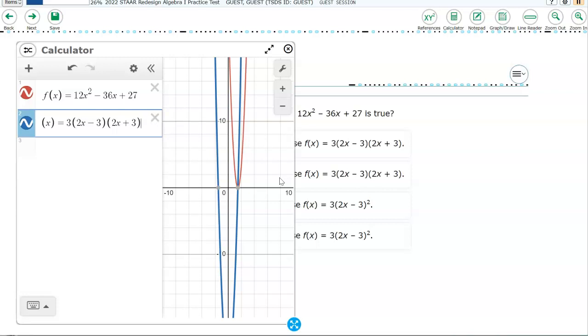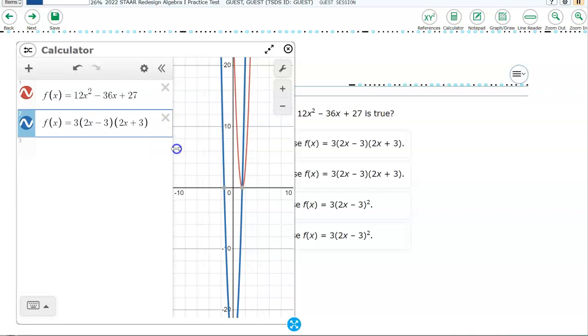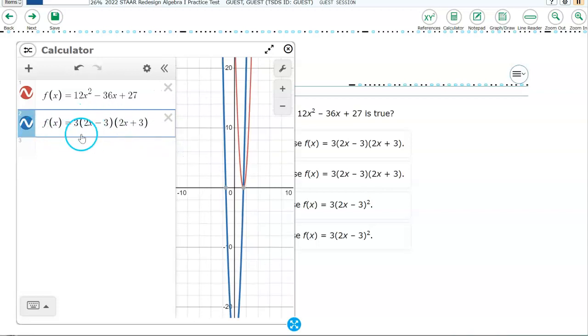So I know answer choices A and B must be incorrect. Because neither one of those have an equation that matches, that makes the graphs match. So let's go down to the last two. And obviously, one of these should work. So let's get rid of this.